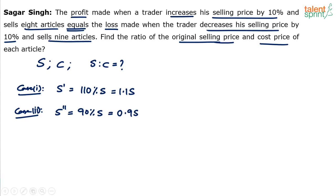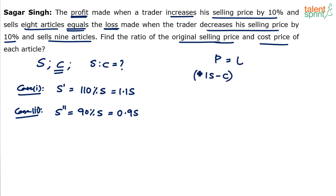Now, the profit made in case 1 is equal to the loss made in case 2. Profit equals loss. Profit is selling price minus cost price. The selling price is 1.1S and cost price is C — there is no change in cost price, it always remains the same. So profit made in the first case is 1.1S minus C. But remember, this is the profit made by selling 8 articles, so this should be multiplied by 8.